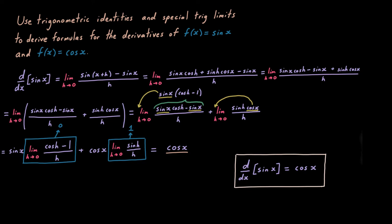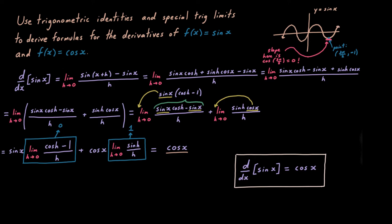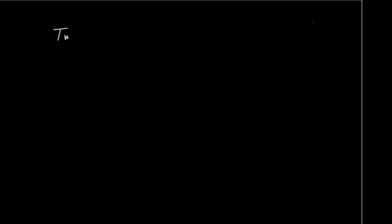We have cosine of x plus 0, which is just cosine of x. So the slope at any point on the graph of sine of x is cosine of the x-coordinate. Who would have thought these things would turn out so nicely? For example, at the point (3π/2, −1), the slope is cosine(3π/2) = 0, which we can confirm visually.